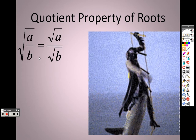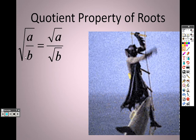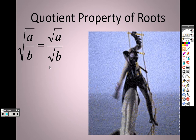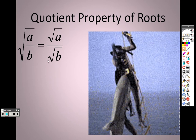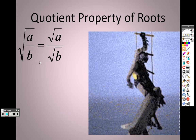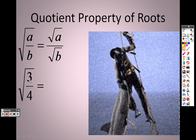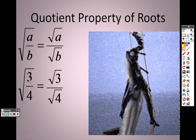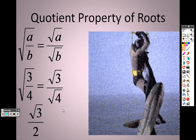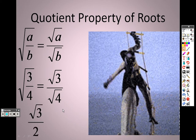The equation property of roots: if I have the square root of a fraction, I can take the square root of the top divided by the square root of the bottom — the square root of the numerator and the square root of the denominator. So if I have the square root of 3/4, I could have the square root of 3 over the square root of 4, and the square root of 4 becomes 2, so it's really square root of 3 over 2.